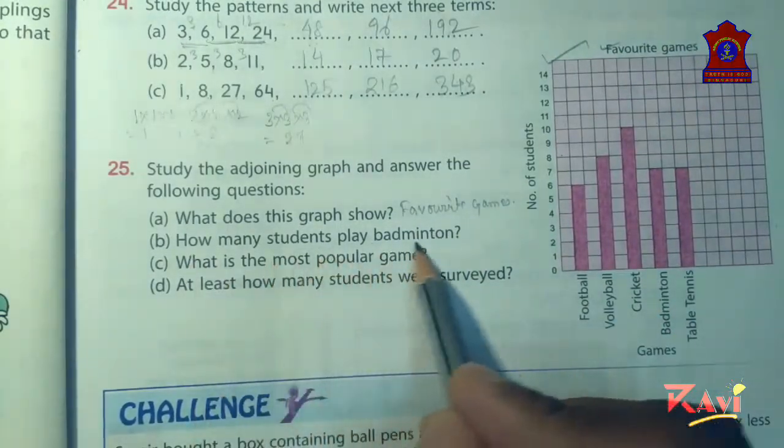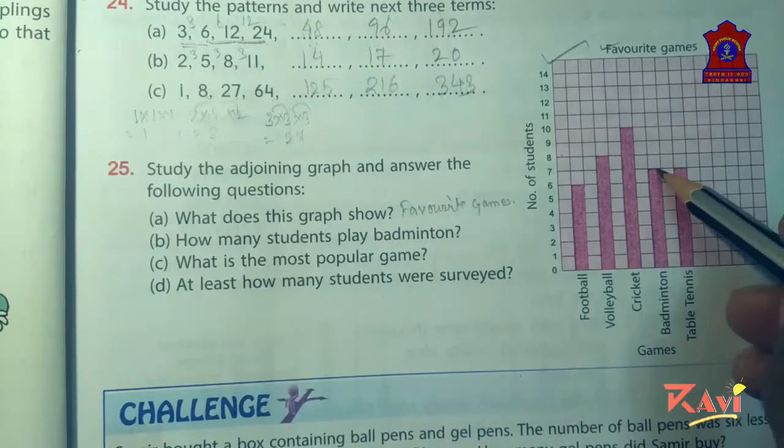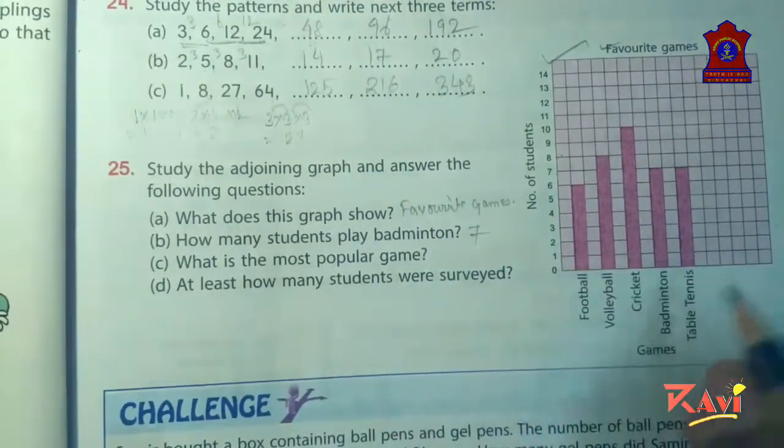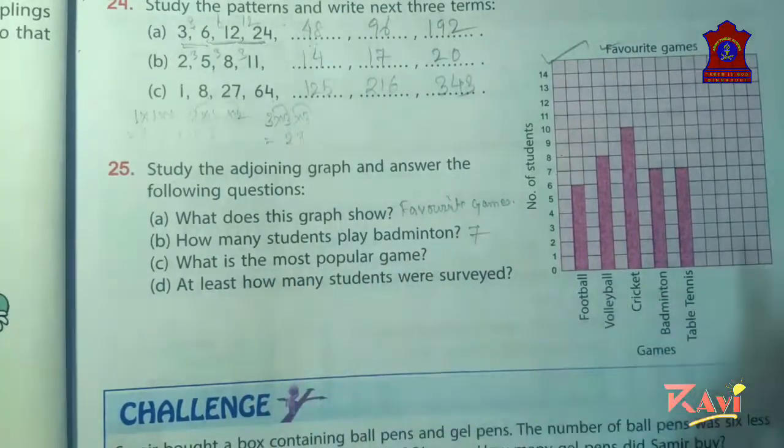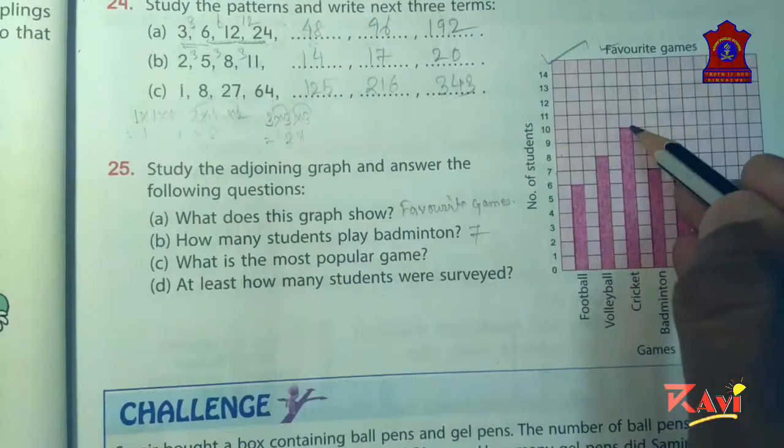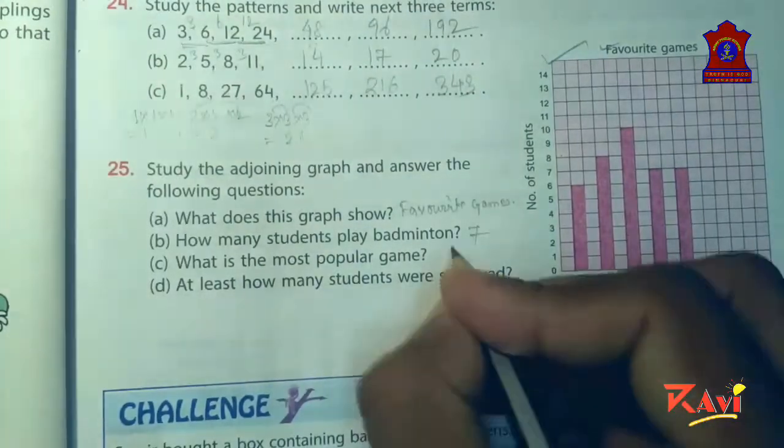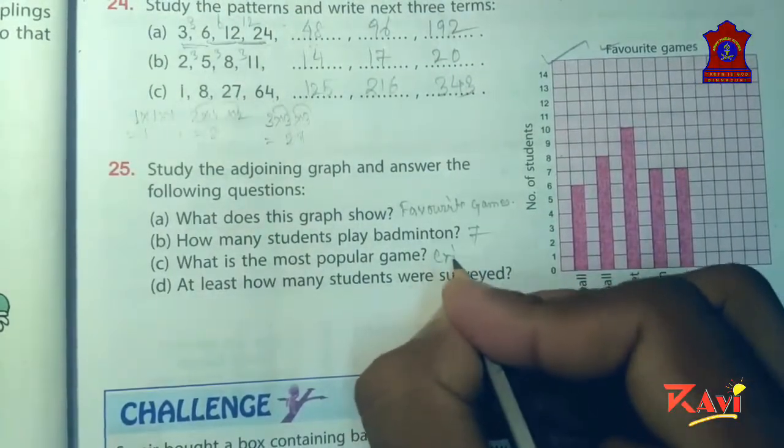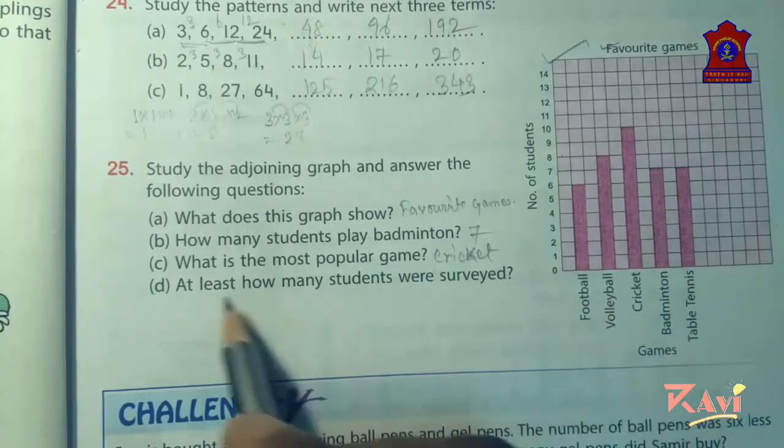How many students play badminton? 7. So write 7. What is the most popular game? Most popular game is cricket. It is played by most number of the students, 10. So you can write the answer: cricket.